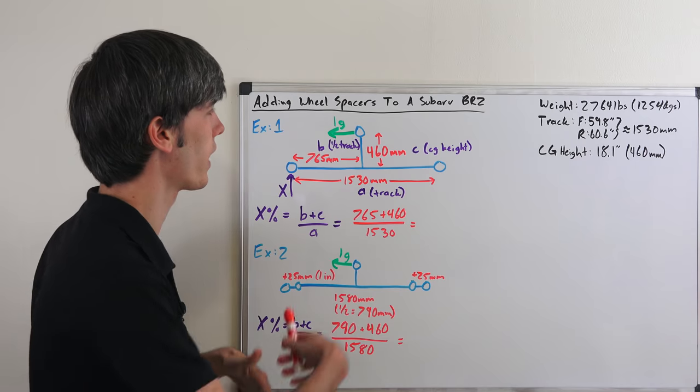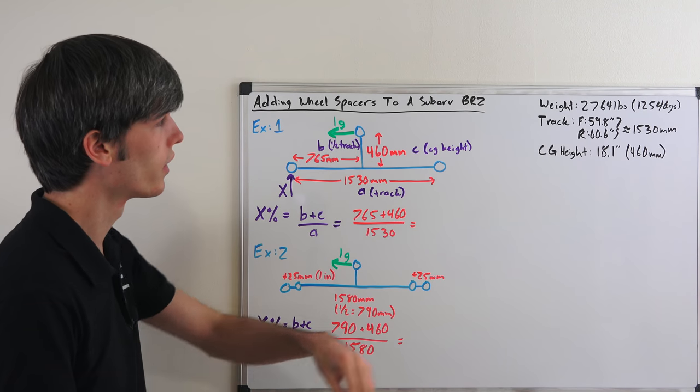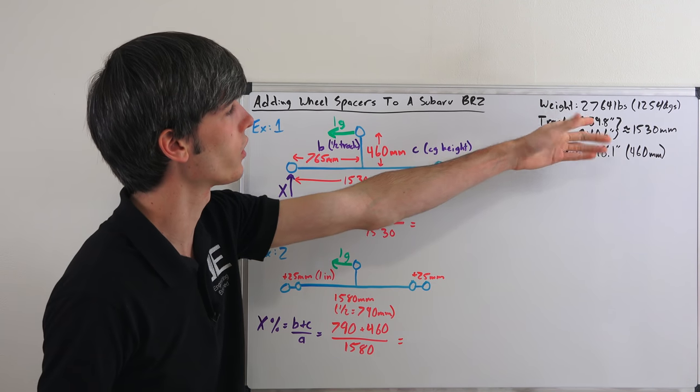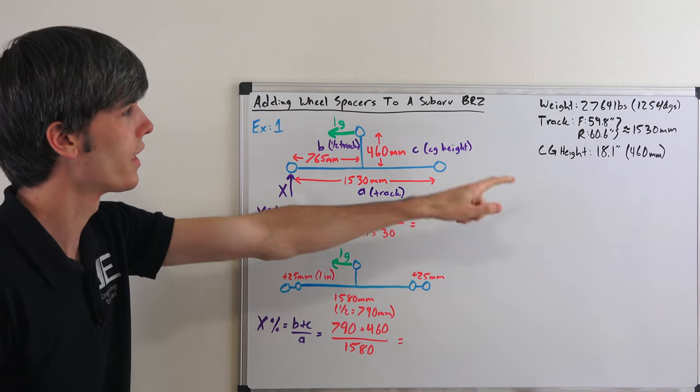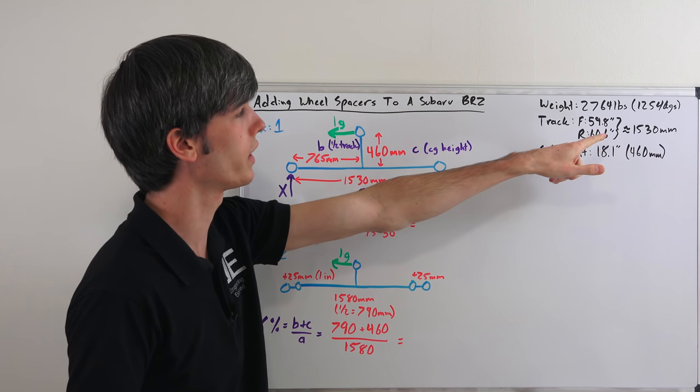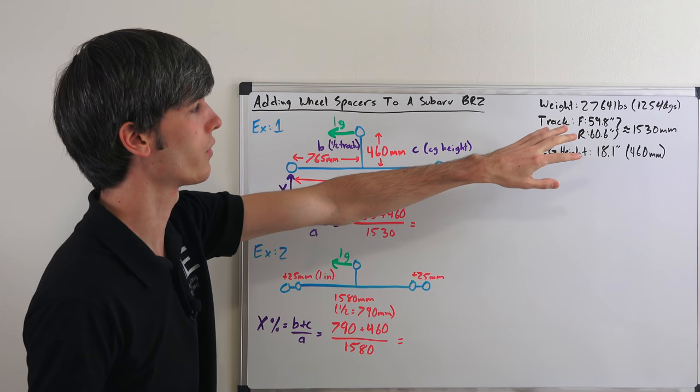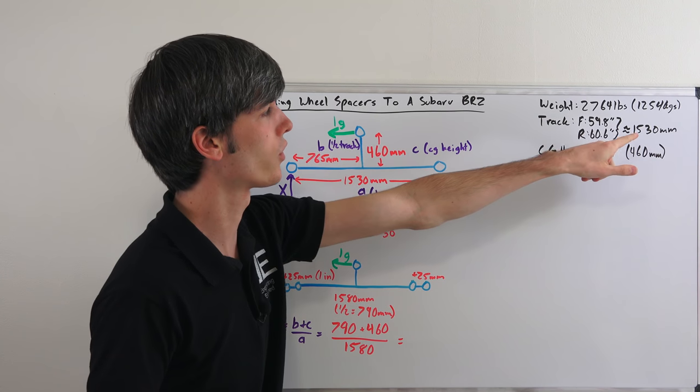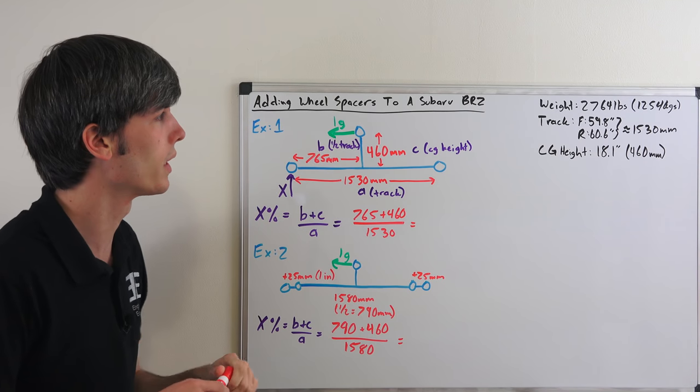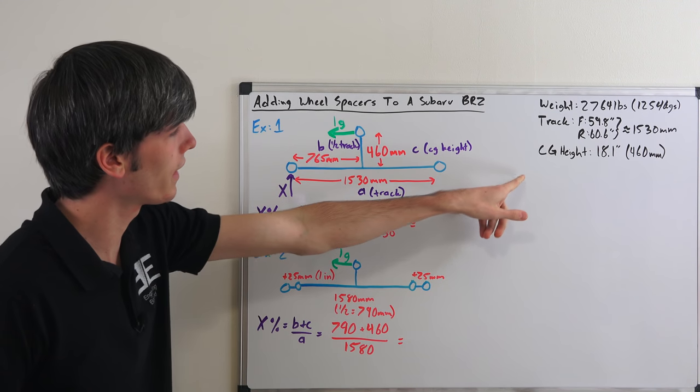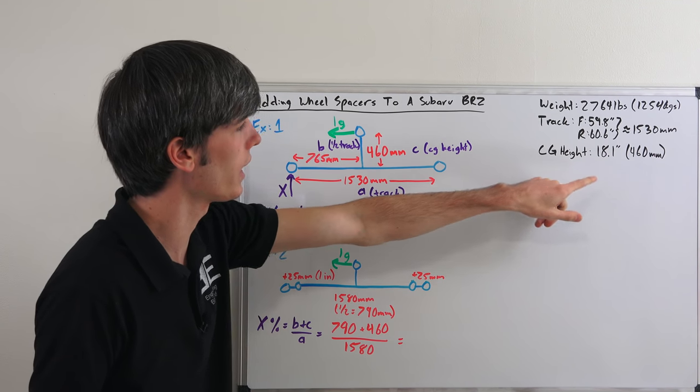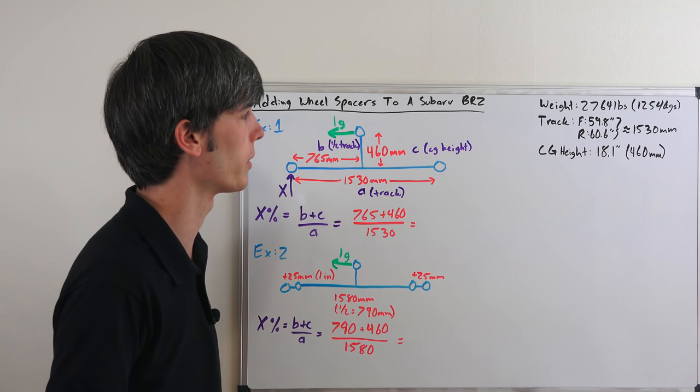I chose this vehicle because I had all the information I needed available. So the weight of the car: 2764 pounds or about 1254 kilograms. The track of the car: 59.8 inches in the front, 60.6 inches in the rear. I took the average of these to simplify it, and so that's going to give us 1530 millimeters. And then we're going to be looking at the CG height: 18.1 inches or 460 millimeters.